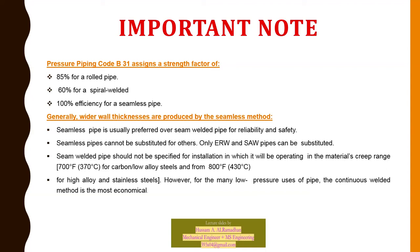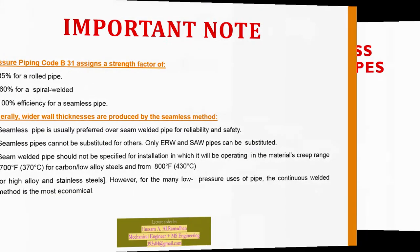The creep range temperature is 700°F (370°C) for carbon and low alloy steel, and 800°F for high alloy and stainless steel. However, for many low pressure applications, the continuous welded method is the most economical.